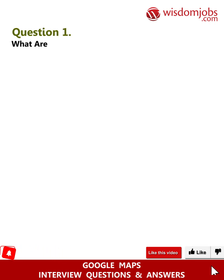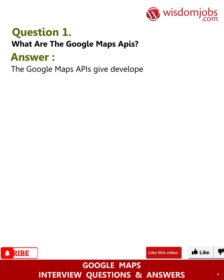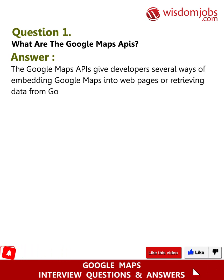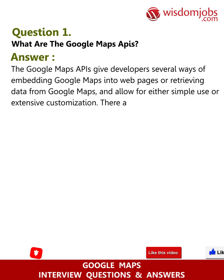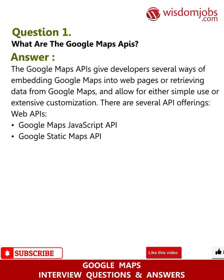Question 1: What is the Google Maps API? Answer: The Google Maps API gives developers several ways of embedding Google Maps into web pages or retrieving data from Google Maps, allowing for either simple use or extensive customization. There are several API offerings. Web APIs include: Google Maps JavaScript API, Google Static Maps API, Google Street View Image API, and Google Maps Embed API.